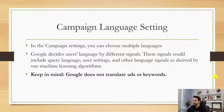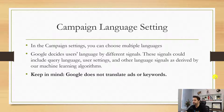So campaign language setting — in the campaign settings you can choose multiple languages. A lot of you probably have seen this, but a lot of people don't know how Google knows. Google decides a user's language by different signals. These signals could be the query language, the user settings, and other language signals as derived by their machine learning algorithms. Basically, it's not a simple process — Google just has their way of deciding what a user's language is and whether to show your ad, depending on your settings.